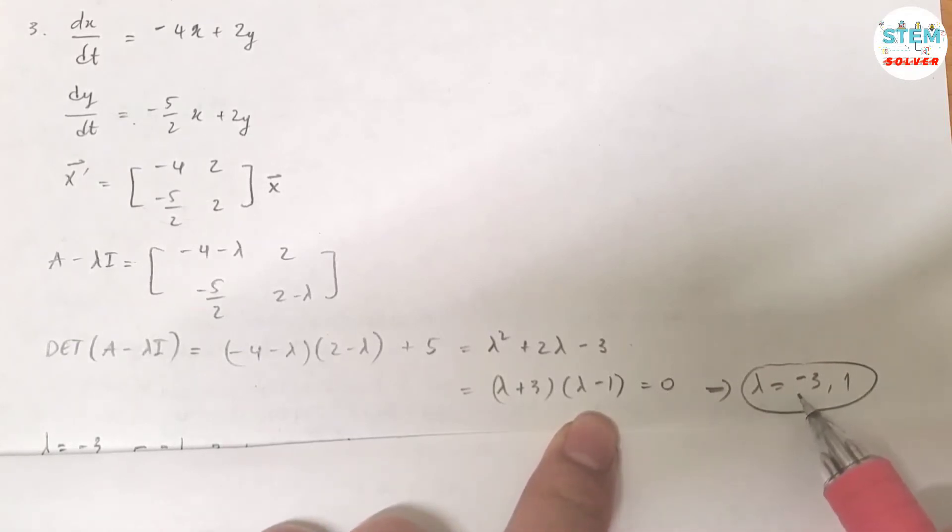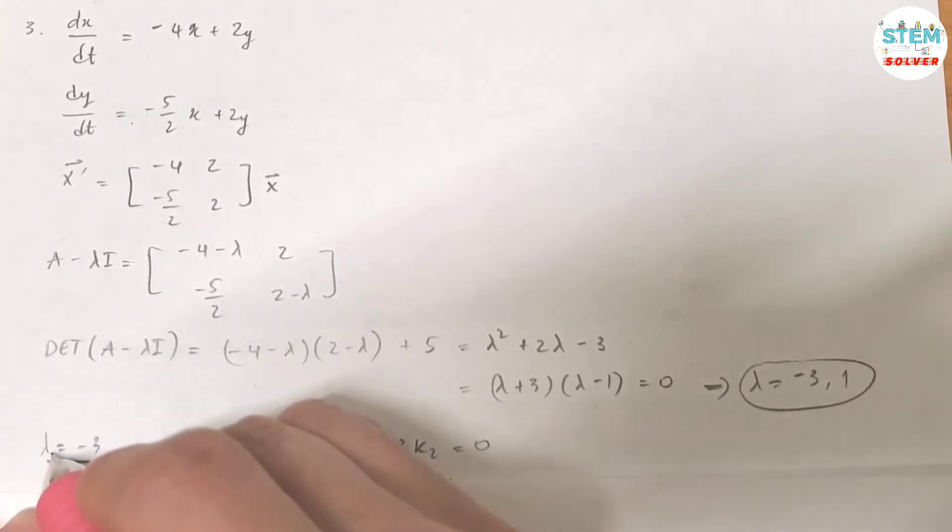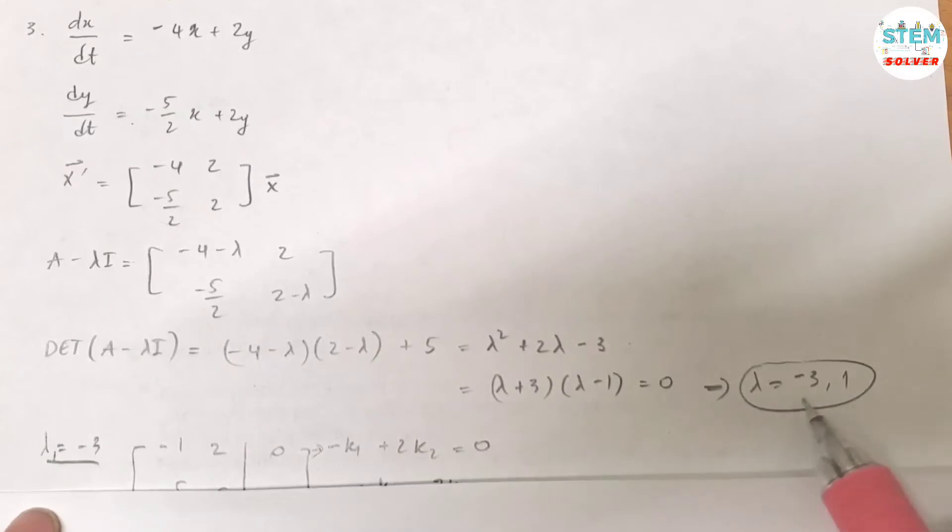I got lambda equals negative 3 and 1. So here's my eigenvalues. Now for each eigenvalue, I will get an eigenvector for it. Let's do it now. For the case of lambda 1 equals negative 3, you can solve for negative 3 first or 1 first. Either negative 3 or 1, doesn't matter.